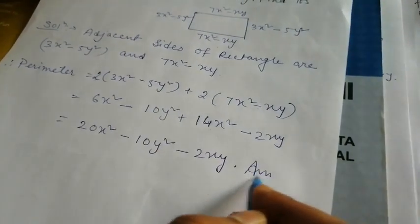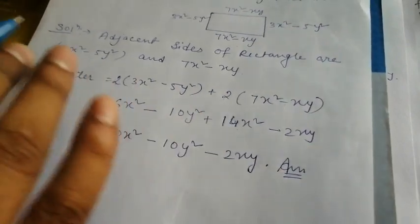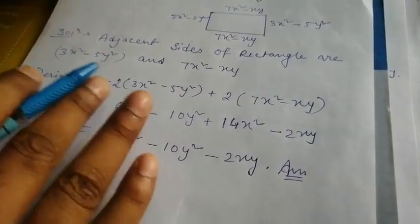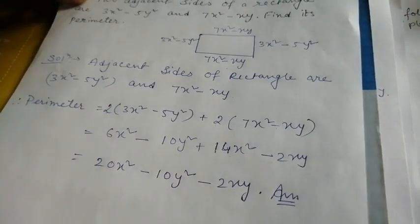So the perimeter of the rectangle is this. I hope all of you understand. And question number four and question number five, this is your homework. You have to solve them like this way. Okay, thank you.